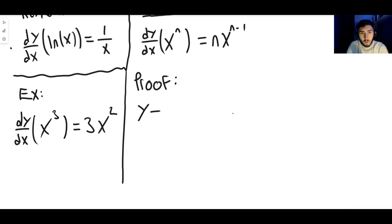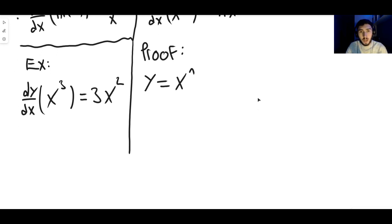Okay, so we want y equals x to the n. What we want to do is show that dy dx is n times x to the n minus one. So here's what we do. We take natural logs on both sides.